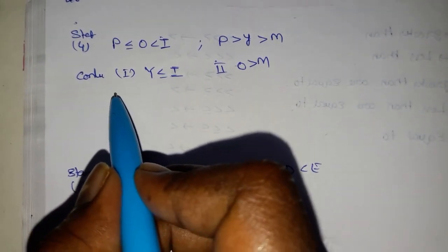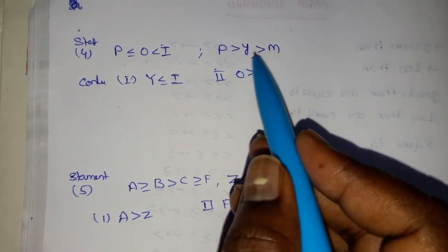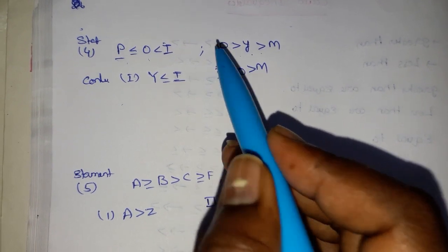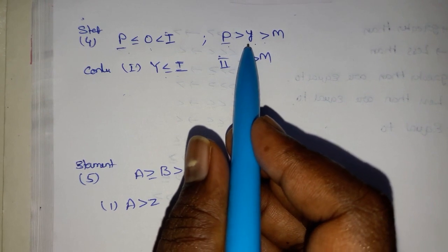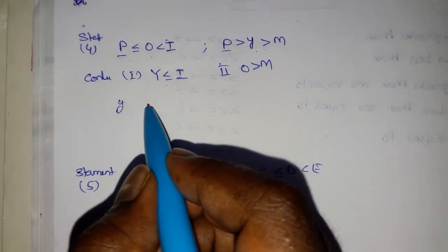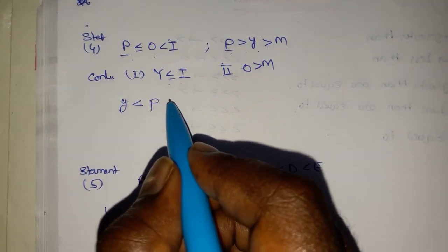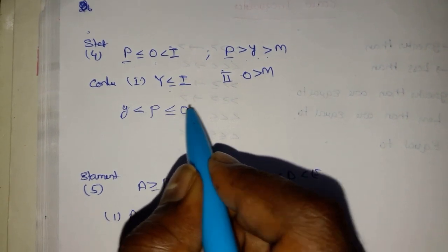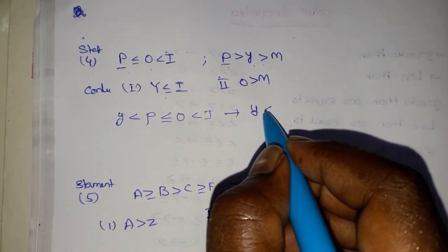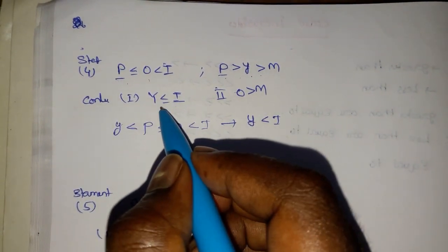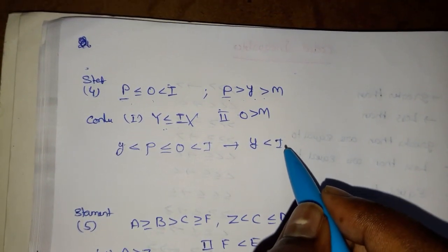Fourth problem: P less than or equal to O less than I; P greater than Y greater than M. The common element is P. First conclusion: Y less than or equal to I. From Y to P: Y less than P. From P to O: less than or equal to O, less than I. Final: Y less than I. But the conclusion states less than or equal to, so this is wrong.